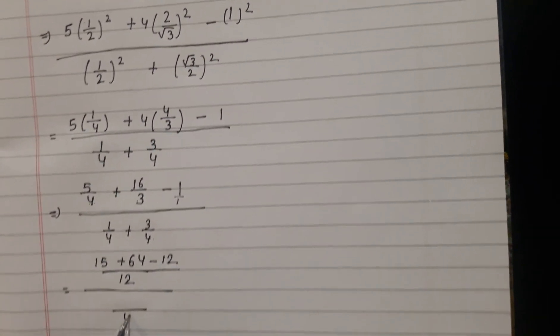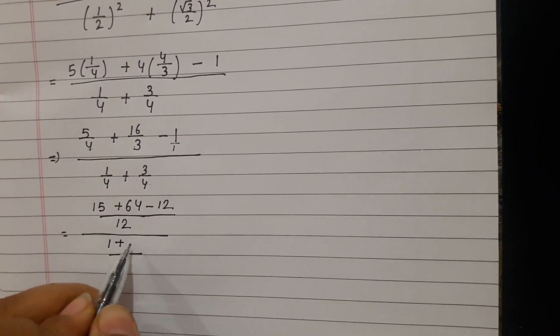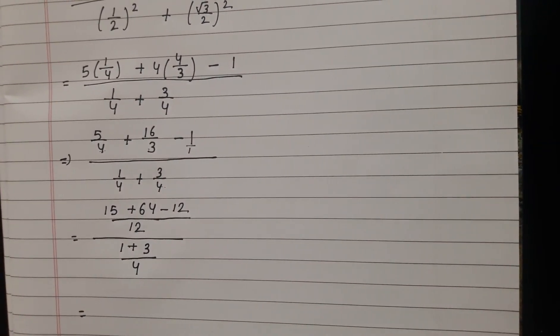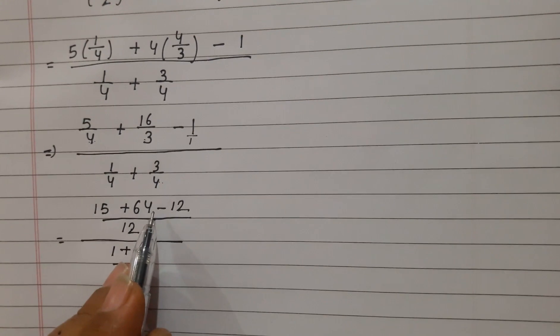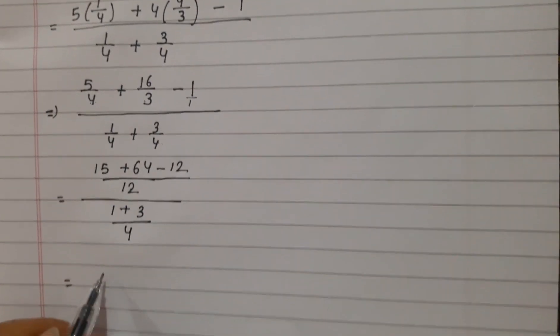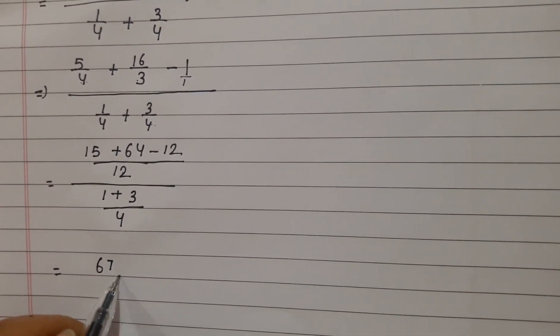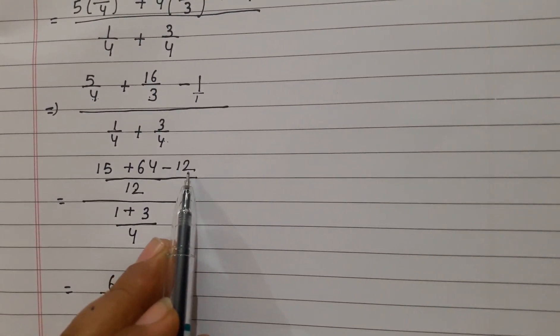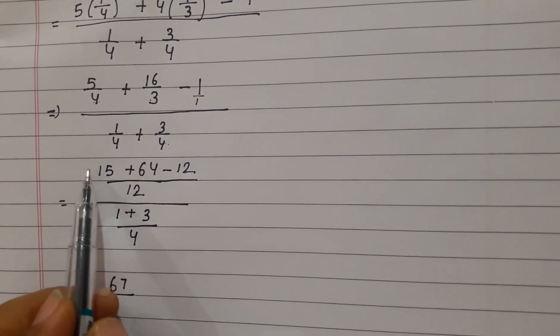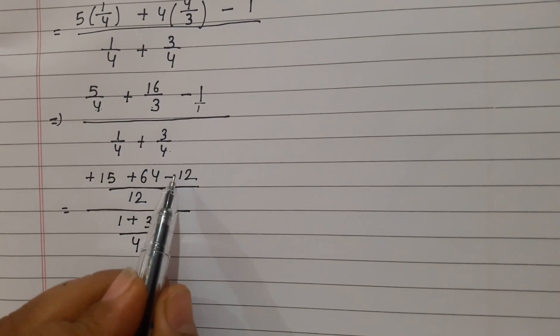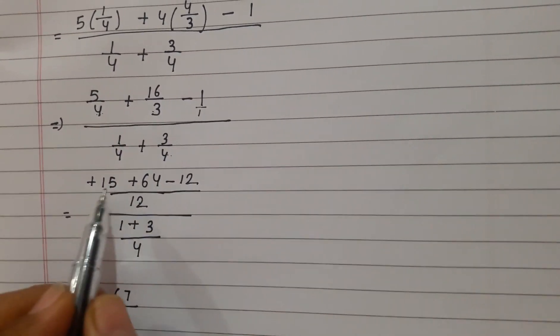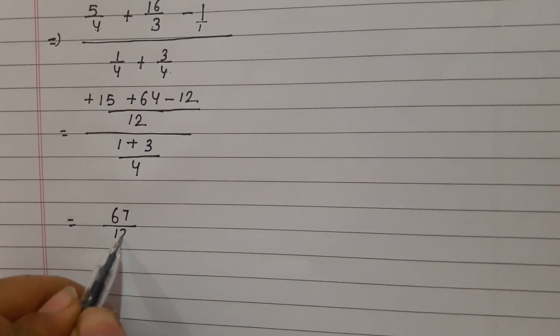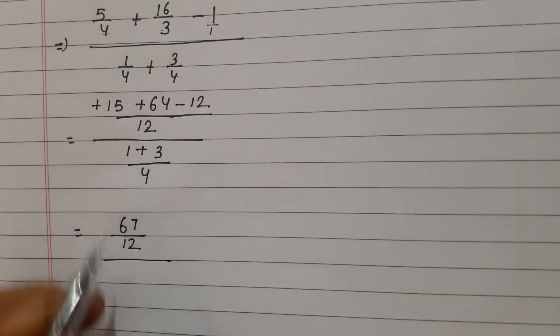Now in the denominator both numbers are the same, so this LCM will be 4 and in the numerator we have to multiply. 15 plus 64 minus 12. 15 minus 12 is 3, 64 plus 3 is 67. And denominator 12 whole divided by, 3 plus 1 is 4, 4 by 4.